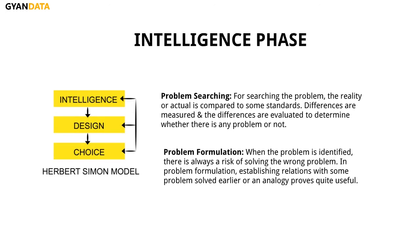Opportunity seeking, on the other hand, is the identification of promising circumstances that might lead to better results. For example, a marketing manager gets to know that two of his competitors will shut down their operations, where demand is constant, for some reason in the next three months. This means that he will be able to sell more in the market. Thus, whether in the case of a problem or for the purpose of opportunity seeking, the decision making process is initiated.